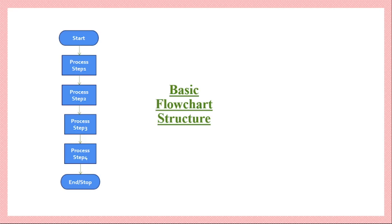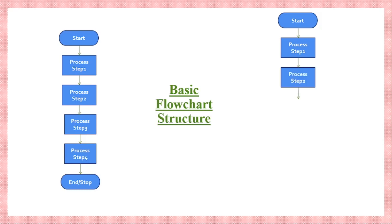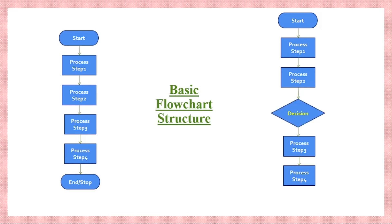The same process will now be performed again in four steps, but this time it will be based on some decision. So again it starts with the relevant symbol representing the starting point, then we execute step one, then step two. As per the previous logic it would then go to step three followed by step four, but here there is a slight difference — between step two and step three we will take some decision.